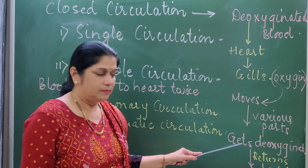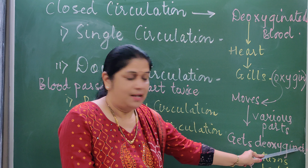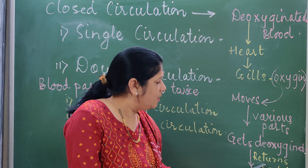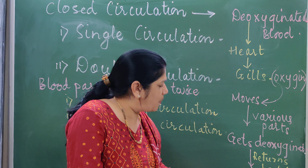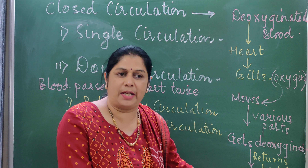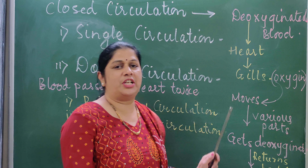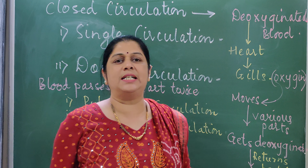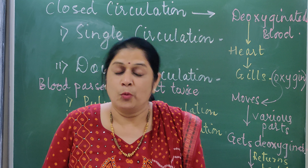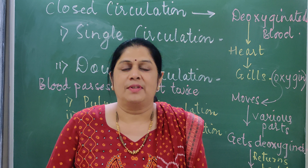What should be double circulation? The flow of blood is twice — the blood passes through the heart twice. So in single circulation, the blood will pass towards the heart at last.